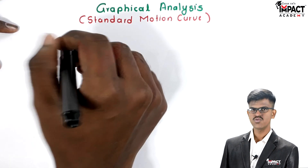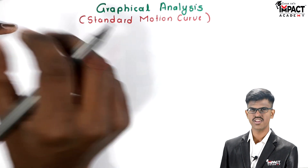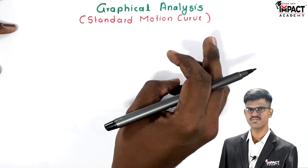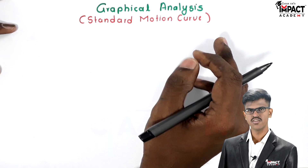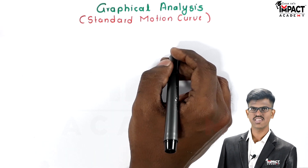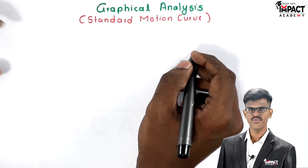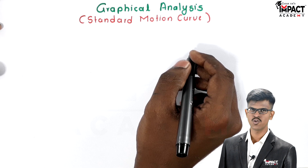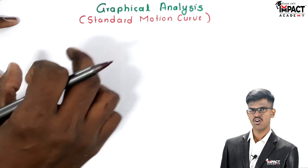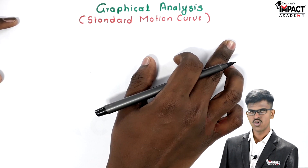In this video, we study standard motion curves for different kinds of rectilinear motion. We know three standard rectilinear motions: first is uniform velocity motion, second is uniform acceleration motion, and third is variable acceleration motion. We will study the motion curve for each of these three different kinds of motion.